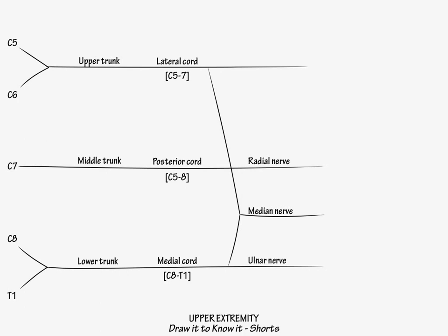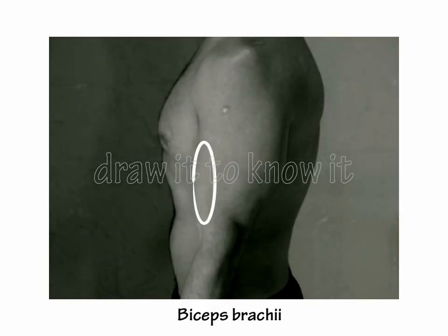Next, just distal to the lateral cord, label the musculocutaneous nerve, and show that it most notably innervates biceps brachii, C5-C6, which is an important elbow flexor.